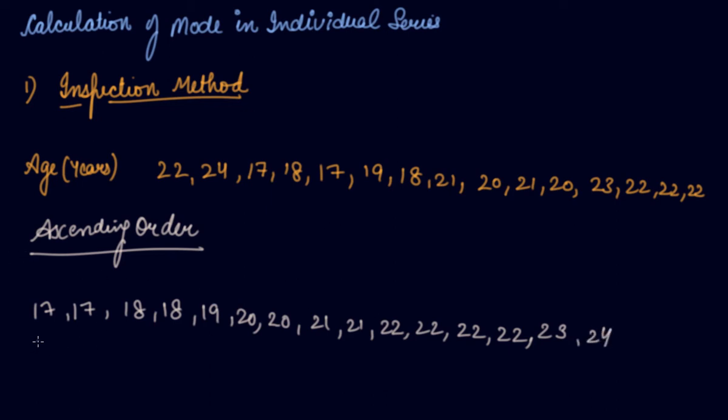By arranging the series in ascending order, we have the number of students as 1, 2, 3, 4, 5, 6, 7, 8, 9, 10, 11, 12, 13, 14, 15 students.